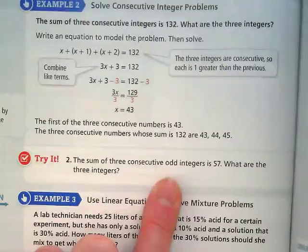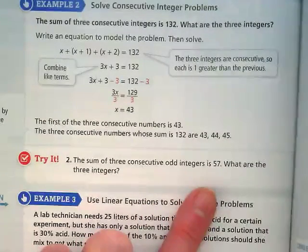It says the sum of three consecutive what? Odd. Is 57. That's going to make this a little bit more challenging to set up.